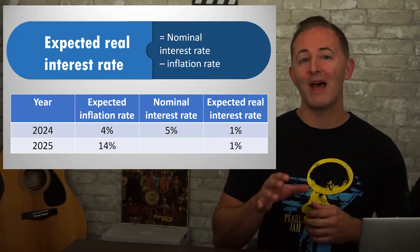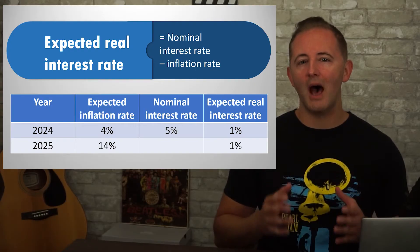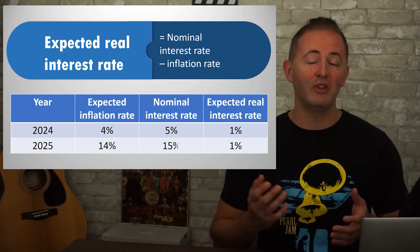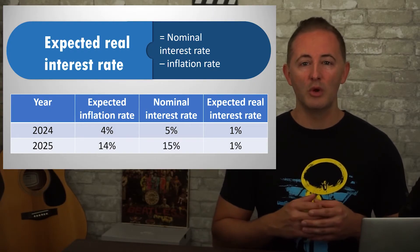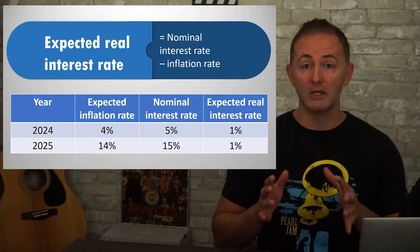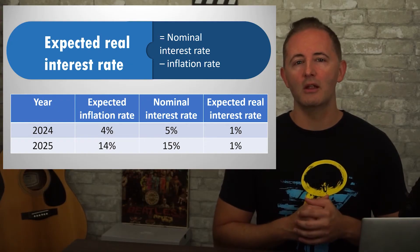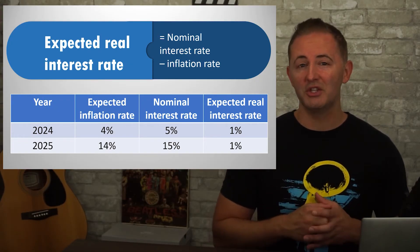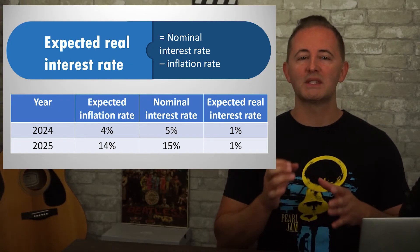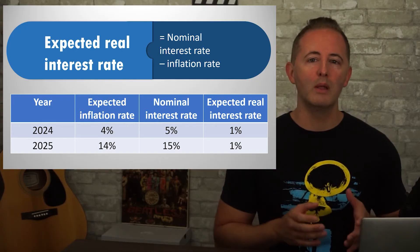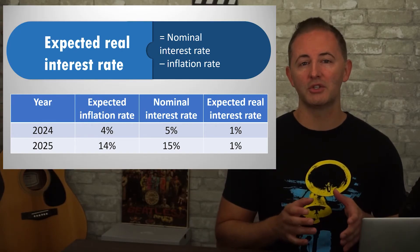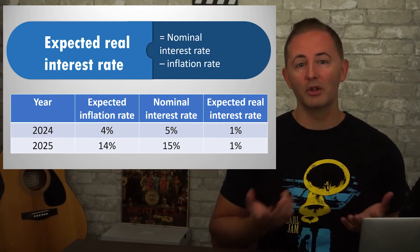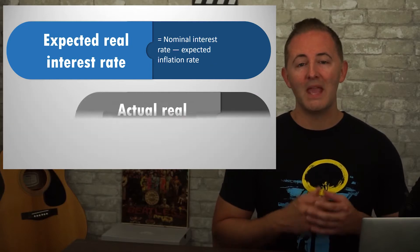What would happen is that, assuming nothing else changes, the real interest rate would stay at 1% because that's what borrowers and lenders actually care about. For that to happen, it would require the nominal interest rate to rise to 15%, which sounds like a really high interest rate. But if everybody's expecting 14% inflation, we're still at the same 1% real interest rate as before. So in real terms, nothing has changed.